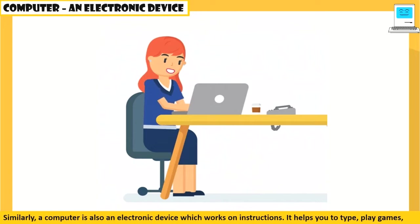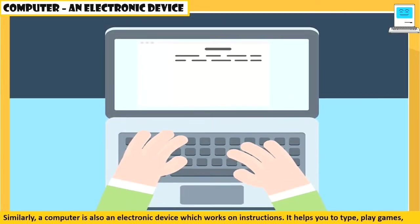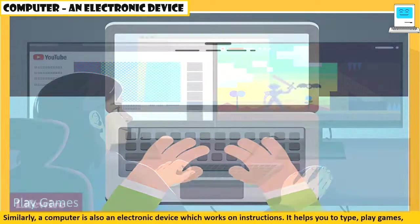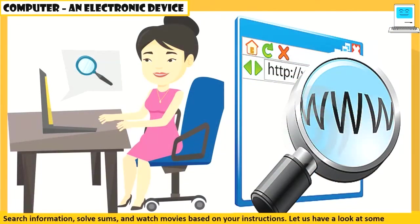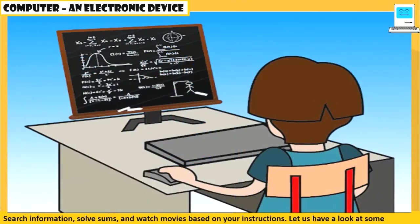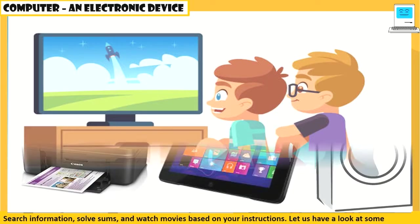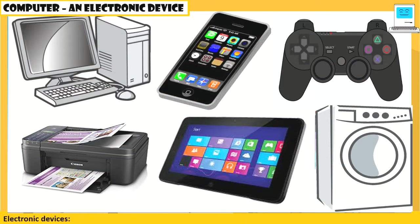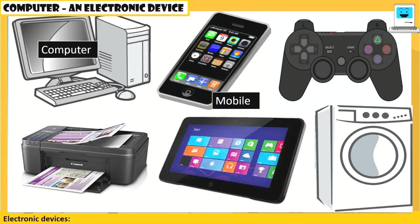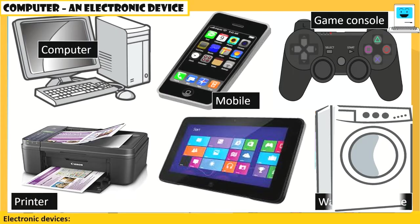Similarly, a computer is also an electronic device that works on instructions. It helps you to type, play games, search information, solve sums, and watch movies based on your instructions. Let us have a look at some electronic devices: computer, mobile phone, game console, printer, washing machine, and tablet.